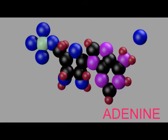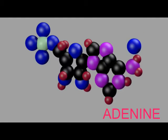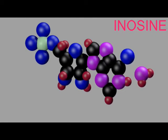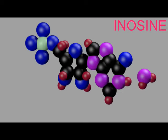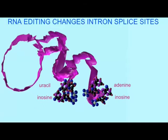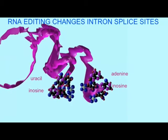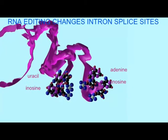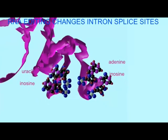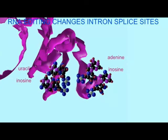While it is possible that the conversion of adenine to inosine — which is often treated as a guanine — can affect the amino acid sequence of a protein, more typically its effect is to change the structure of double-stranded RNA, which then has other effects such as altering intron splicing.